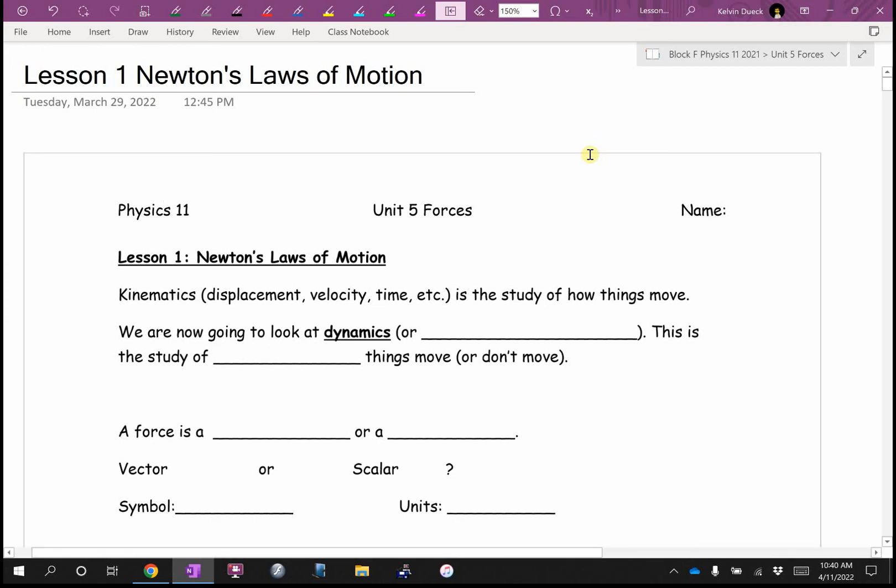What we've looked at actually is called kinematics. Kinematics was displacement, velocity, time, acceleration. It was VF equals VI plus AT. It was VF squared equals VI squared plus 2AD. That was kinematics. Kinematics is the study of how things move.